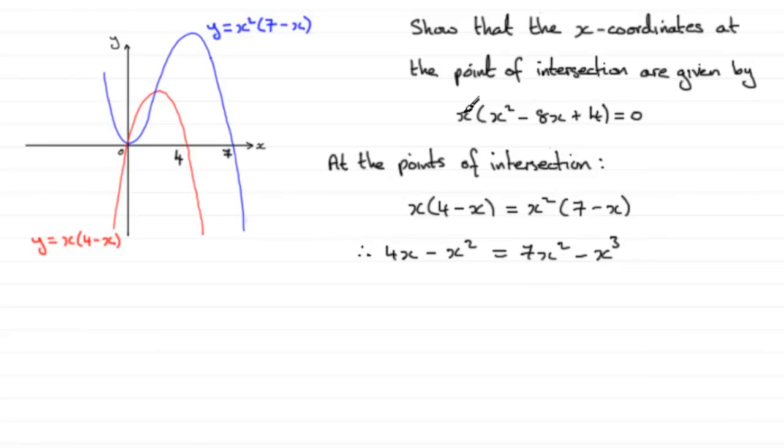Noticing that I've got x times x² here, which is +x³, I'm going to add x³ to both sides and also subtract 7x² from both sides. So if I do that, I'm going to get x³ - 7x² - x² + 4x, and that's going to equal 0.